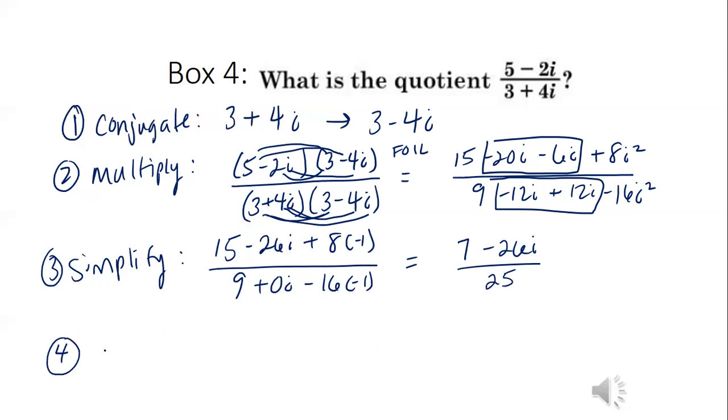And then step four is to put in complex form, so A plus Bi. And that just means I'm separating the two terms. So that gives me 7 over 25 minus 26 over 25i.